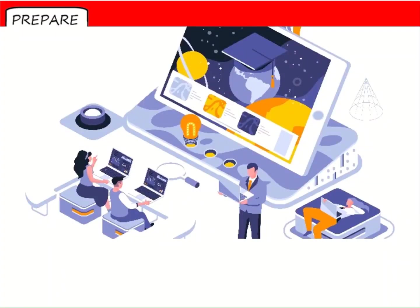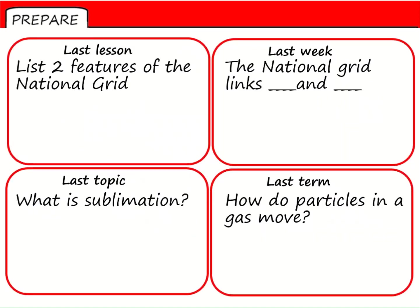Hello and welcome to another remote lesson in physics. We're going to start today as usual with four starter questions. Number one: list two features of the national grid. Number two: what two things are linked by the national grid? Number three: what is sublimation? And finally, number four: how do particles in a gas move? Pause your tape now and write your answers.